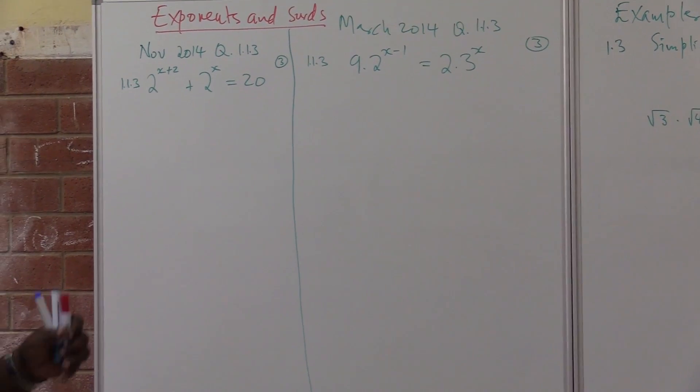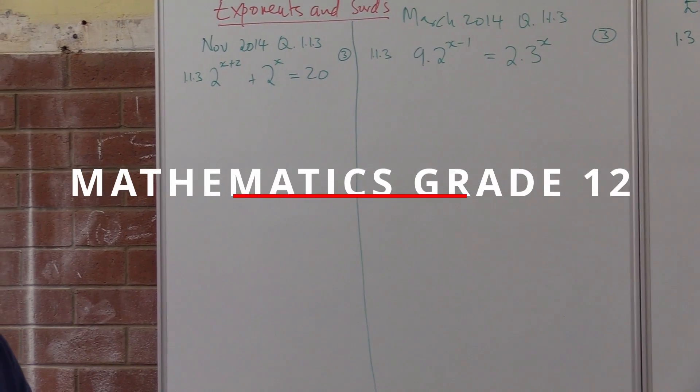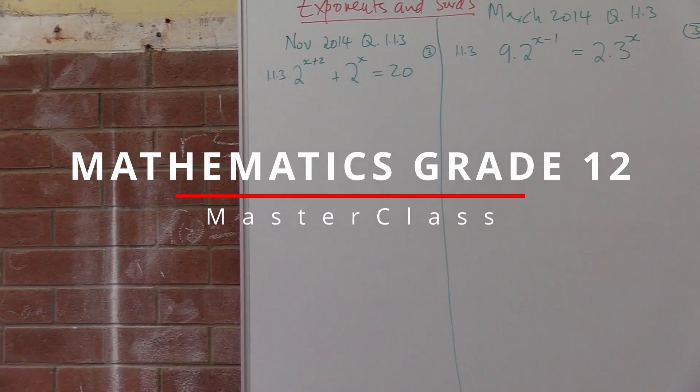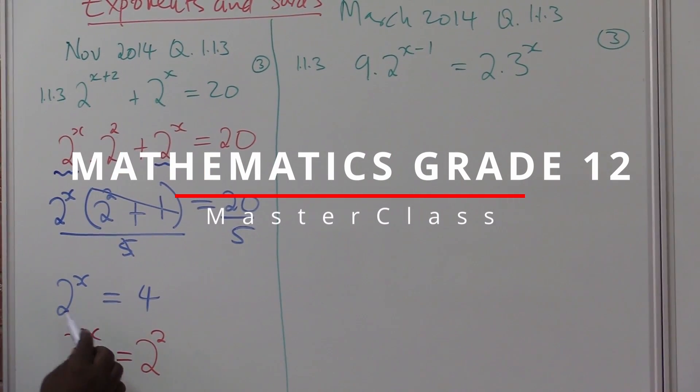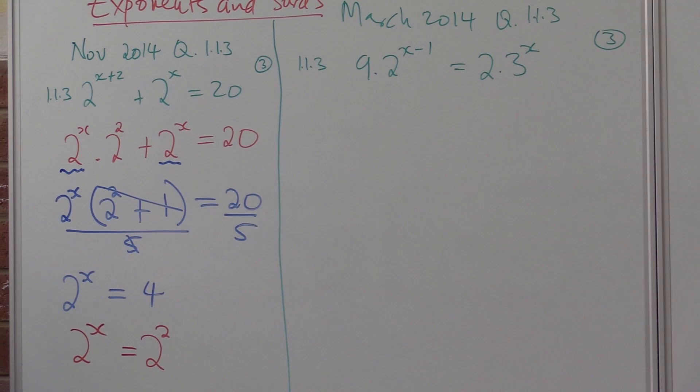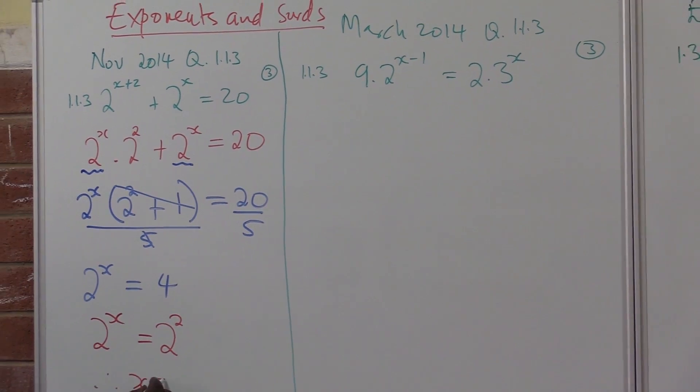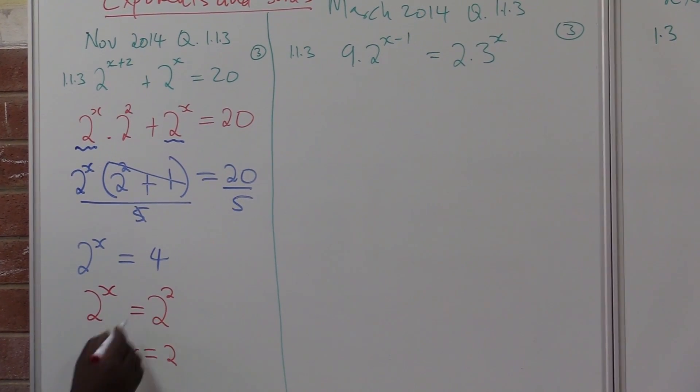I want us to look at this subtopic under algebra called exponents and sets. If the bases are the same, therefore the exponents will be the same. This means that x equals 2, because the bases are also the same.